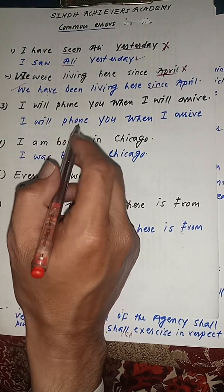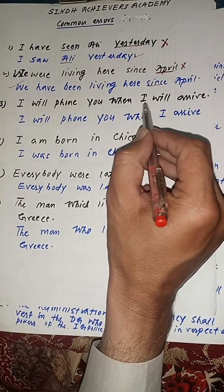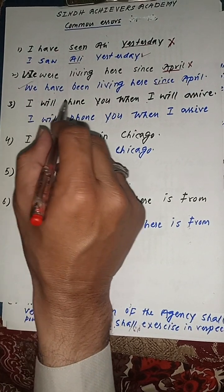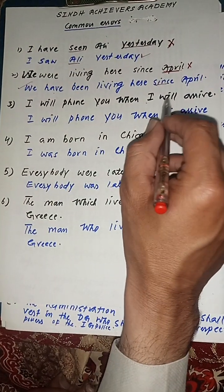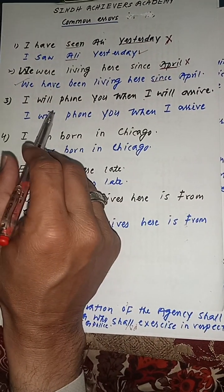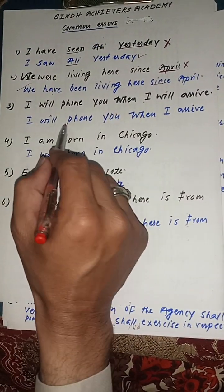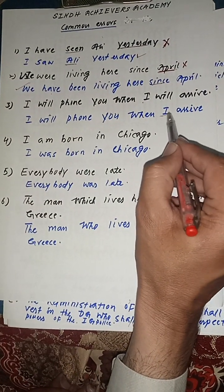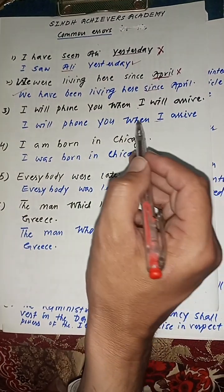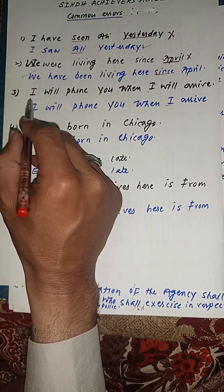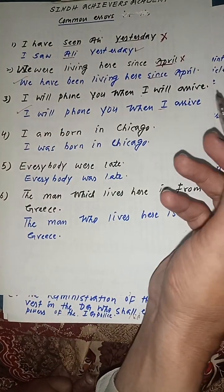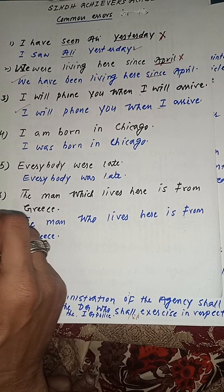When children use double future tense in a sentence — for example: 'I will phone you when I will arrive.' This is grammatically incorrect. When one part of a sentence is future, keep the other part simple. You don't have to use double future. The correct sentence is: 'I will phone you when I arrive.'